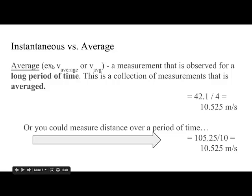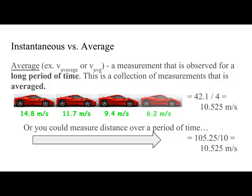Average, on the other hand, and once again you can use the term average in the subscript here to modify, in this case velocity, or AVG to modify velocity. Average is a measurement that is observed for a long period of time. This is a collection of measurements that is averaged. And so in our math class, in order to average numbers, you add them all up, and you divide by the number of numbers. So if I'm in my Ferrari again, you can look at the very first example of my velocity, followed by the very next example, and so on and so on and so on. And so at one point I'm traveling 14.8 meters per second, but then the next split second I'm traveling at 11.7.